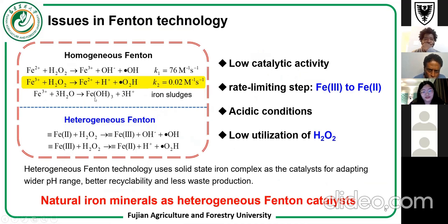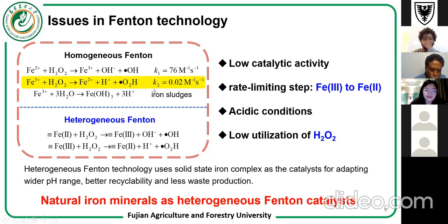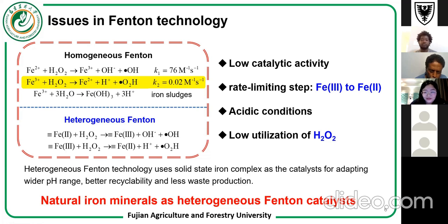The traditional homogeneous Fenton reaction involves some shortcomings. The Fe(III) to Fe(II) reduction step is the rate-limiting step in the overall reaction. Also, the reaction normally happens under acidic conditions with pH around 3, which limits catalytic activity and hinders the further application of Fenton technology.